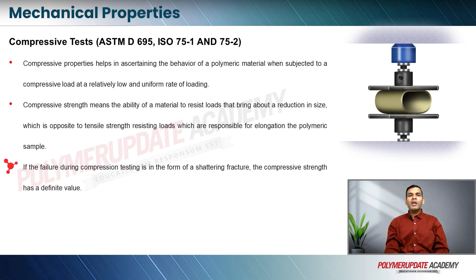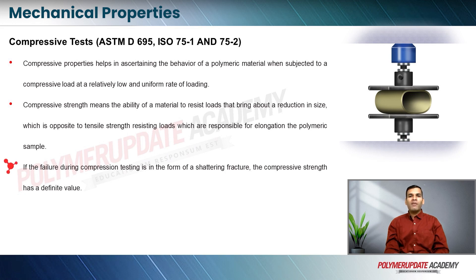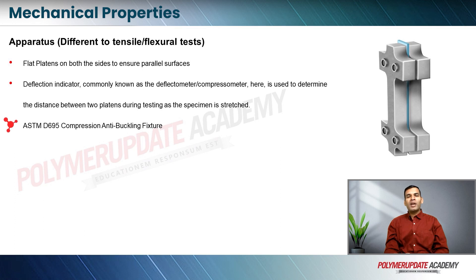If the failure during compressive testing is in the form of a shattering fracture, the compressive strength has a definite value. The apparatus uses flat platens on both sides to ensure parallel surfaces, and a deflectometer is used to measure the distance between the two plates as they come closer together. There is also an anti-buckling fixture, with the sample clamped in the center.